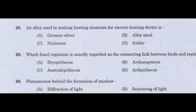An alloy used in making heating elements for electric heating devices is which option? Option A: German silver. Option B: alloy steel. Option C: nichrome. Option D: solder. Answer: Option C, nichrome.